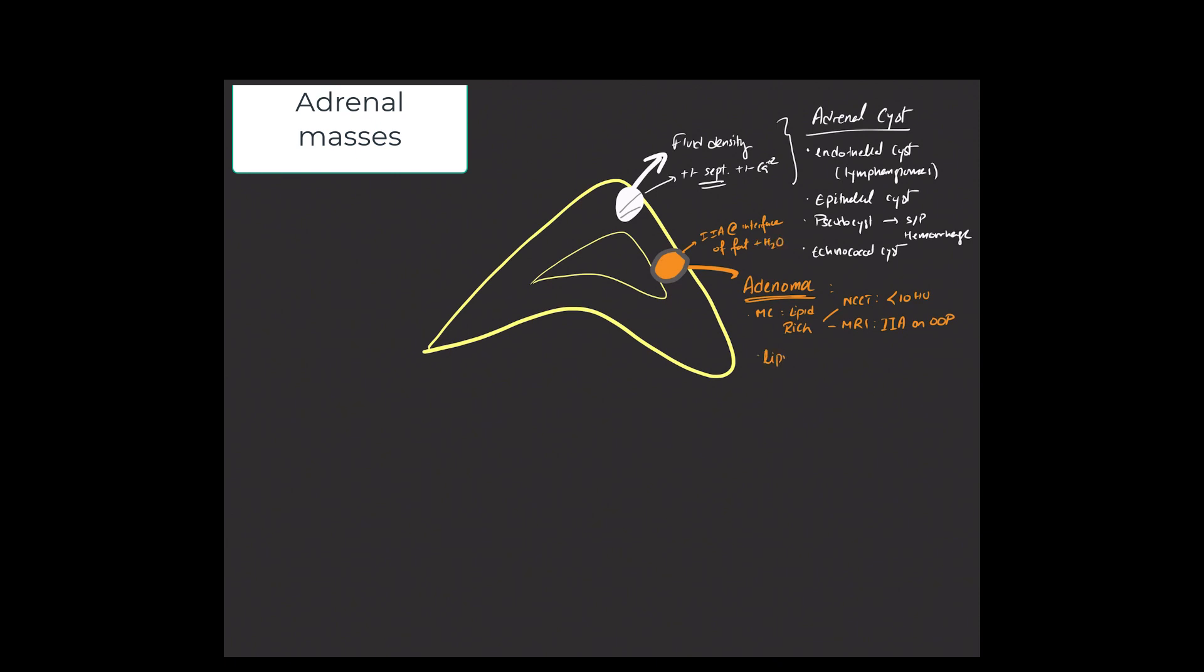Less commonly, you'll have lipid-poor adenomas, and they tend to be a little bit more challenging to diagnose. Your best bet is doing a washout calculation where you do three phases: an unenhanced phase or non-contrast phase, an enhanced phase at about 70 seconds, and a more delayed phase at about 15 minutes. And you measure the Hounsfield units of the mass, and you can do a mathematical calculation, the enhanced phase minus delayed phase over the enhanced minus the unenhanced. Or you can use online calculators to calculate this inputting the data. If you see greater than 60% washout, you're going to be confident that this is going to be a lipid-poor adenoma.